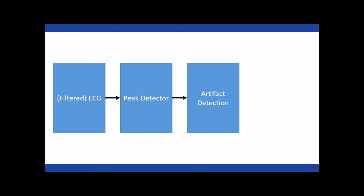This peak detector is not perfect. It can struggle with non-normal data, which can be caused by motion noise, poor electrode placement or connection, or electrical interference like 60 Hz noise caused by surrounding electrical equipment. So we want to take these peaks and determine whether or not they might be artifact or error introduced by the peak detector.